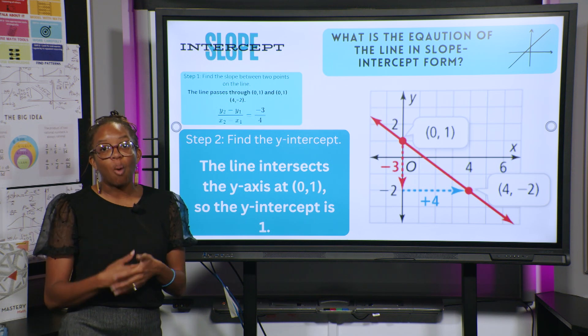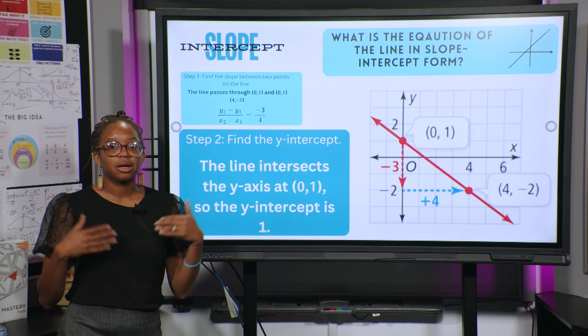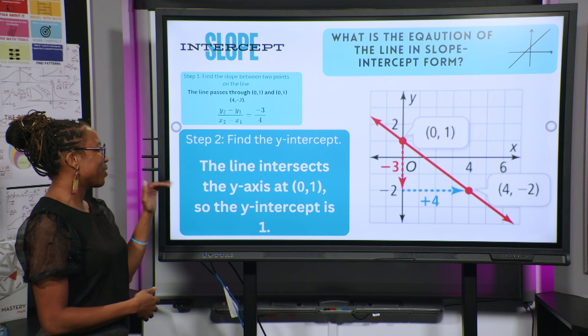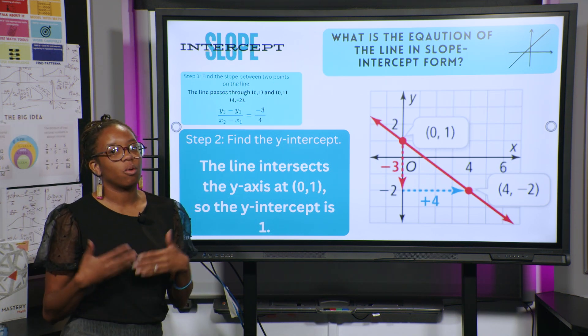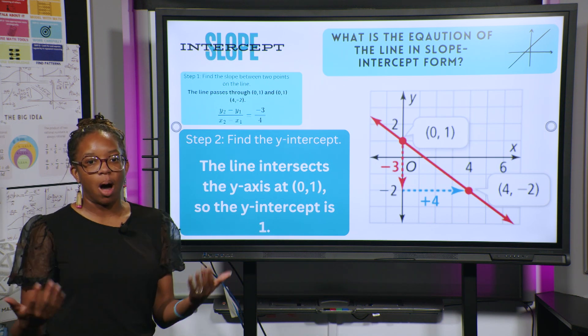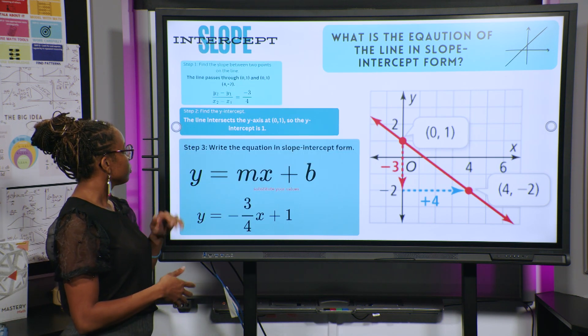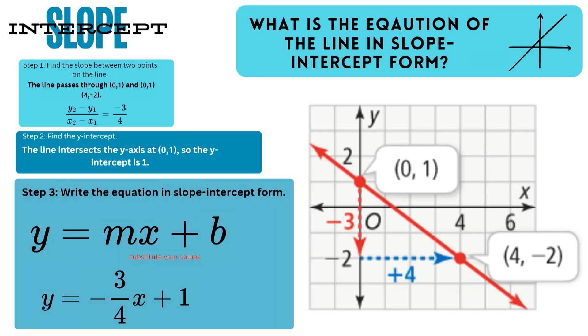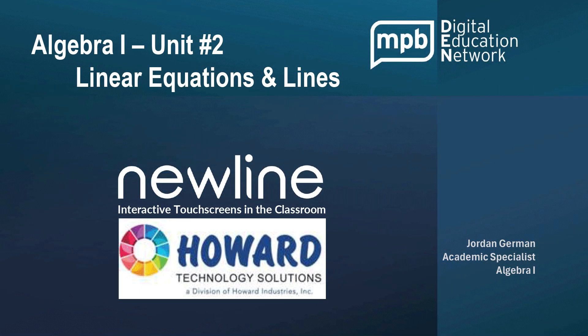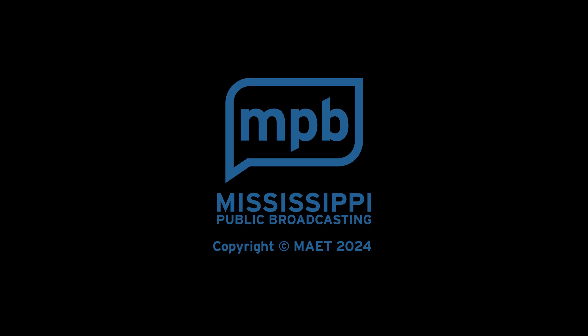The next thing is to find the y-intercept. The line intersects the y-axis at 0 comma 1. So the y-intercept is going to be 1. So you're just looking at what is my y, which is 1. Step 3 is to then take those pieces, take the slope that you've gotten, take the y-intercept that you have and write it out in that standard form, which is y equals mx plus b. So therefore, now all we're doing is substituting in our values.